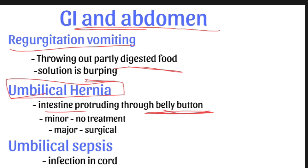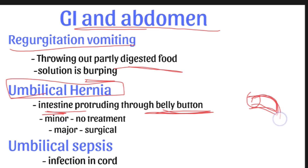Umbilical hernia: in the umbilical region — the belly button area — the intestine will try to come out, creating a finger-like bulge. The intestine is trying to come out through the belly button but is not exposed. It can be considered in two ways: minor or major. In minor conditions, treatment is not required and it will go back on its own.